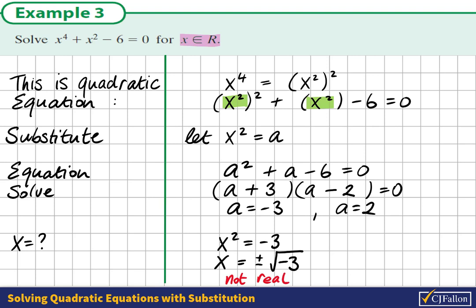The other option is that x^2 = 2. Therefore, x = ±√2. This answer is OK. These two answers are real.